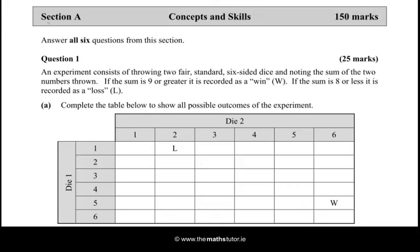Hi there. An experiment consists of throwing two fair, standard, six-sided dice and noting the sum of the two numbers thrown. If the number is 9 or greater, it is recorded as a win, mark W. If the sum is 8 or less, it is recorded as a loss. Complete the table below to show all possible outcomes of the experiment.